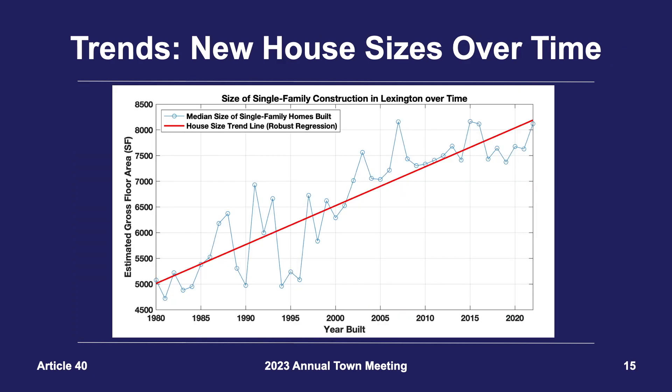We can also look at the trend in house size over time. The blue line represents the median size of new construction per year. The red line is a statistical fit to this data, showing the nature of the overall upward trend in size over time.